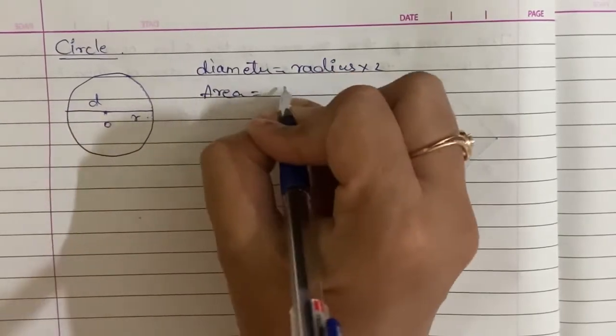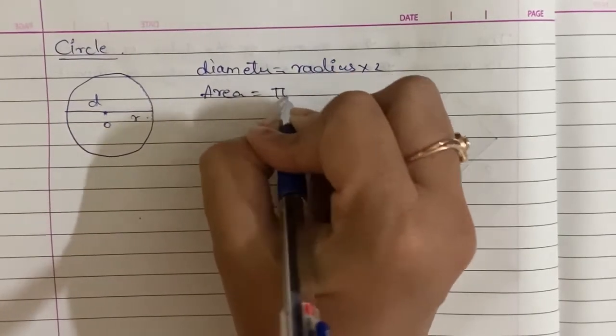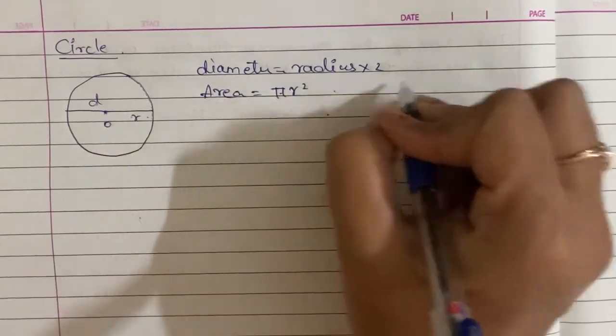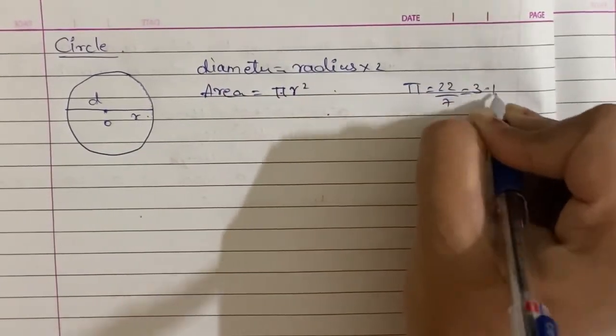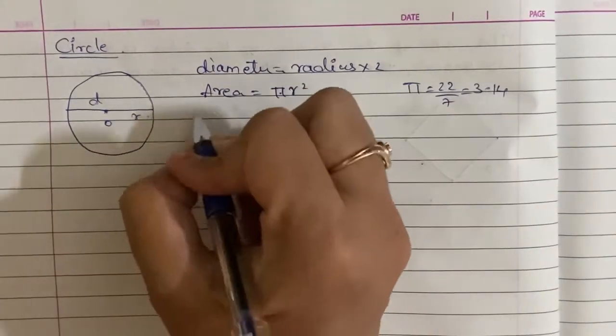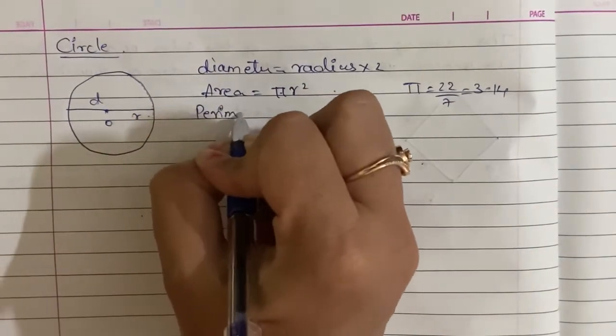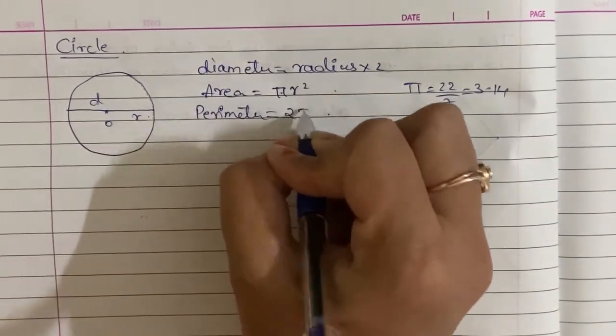Area of the circle is equal to pi r square. Pi is equal to 22 by 7 that is equal to 3.14 approximately. Perimeter of the circle is equal to 2 pi r.